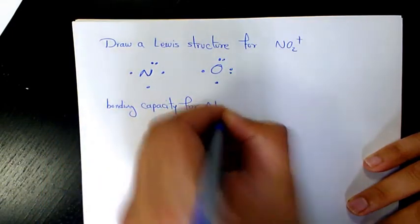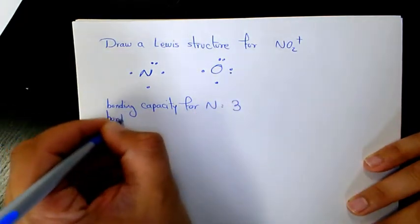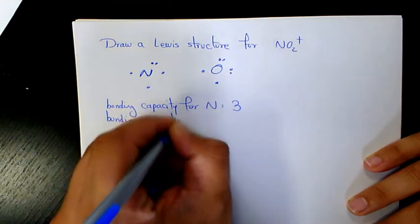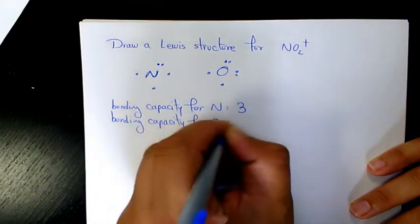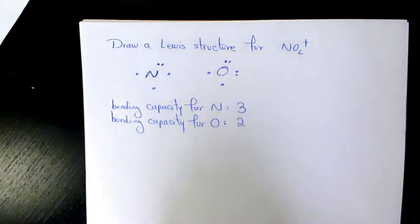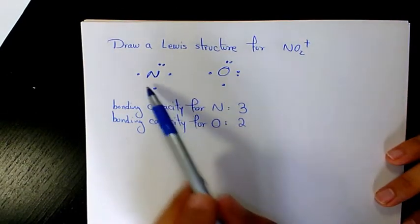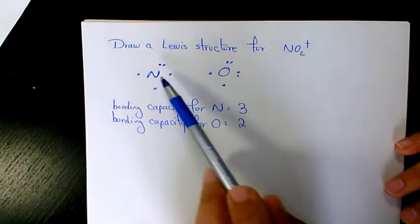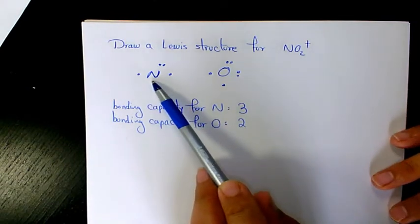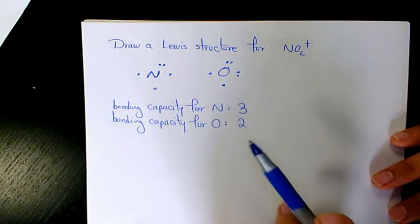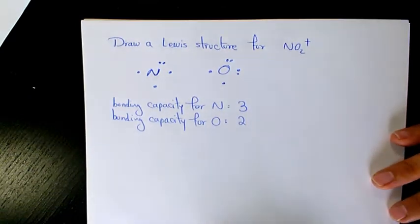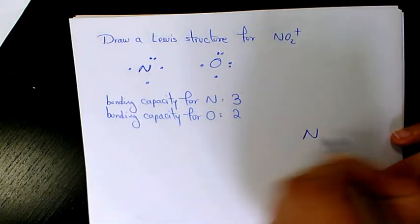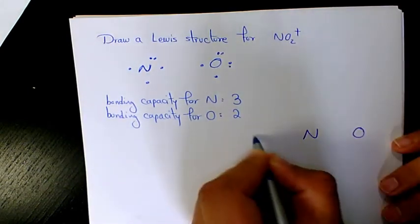So bonding capacity for nitrogen is three and bonding capacity for oxygen is two. Since nitrogen has the larger bonding capacity, I'm going to use it as a central atom and oxygen atoms are going to be the surrounding atoms. So now what I need to do is put N in the middle and O on the other sides of this N.